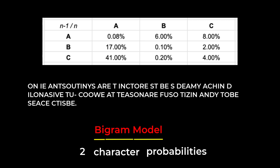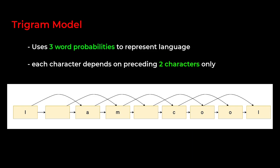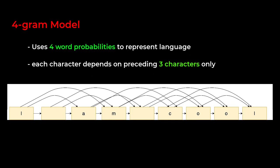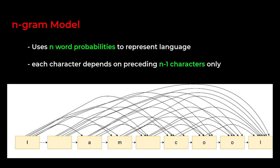While the bigram model is better than the unigram model, the sentences generated are far from perfect. But instead of bigram models, we can create trigram models where we use 3 character probabilities to create language. Or we can extend this to 4-gram models and use 4 character probabilities to create language. And generally speaking, we can extend this to n-gram models where language is created using n character probabilities.